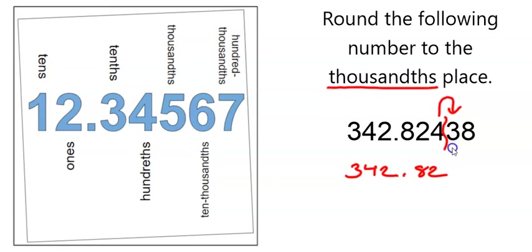If that first number that we're cutting off is less than 5, then the number that is left, the last number we're keeping, is going to stay the same.